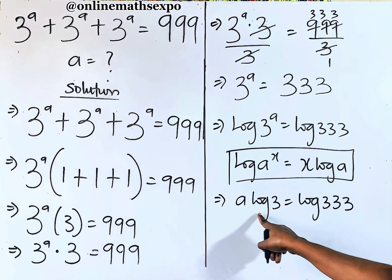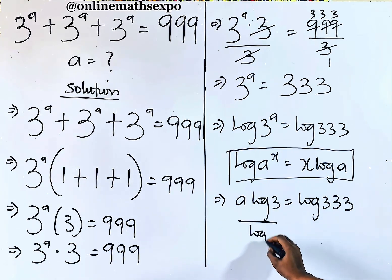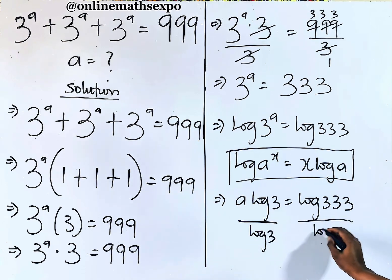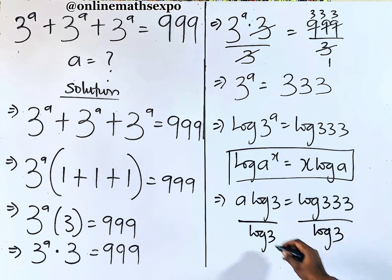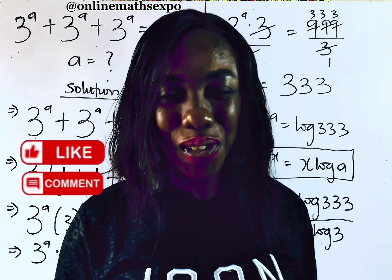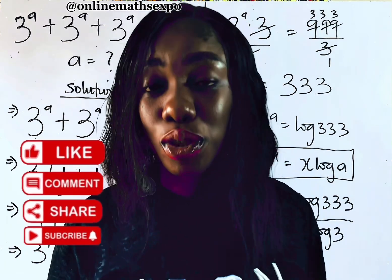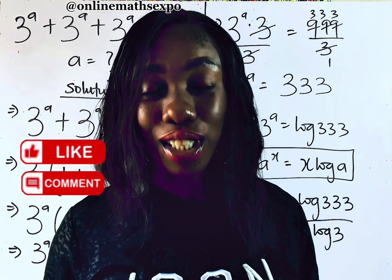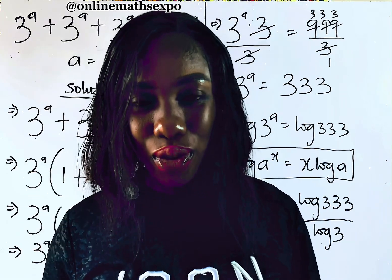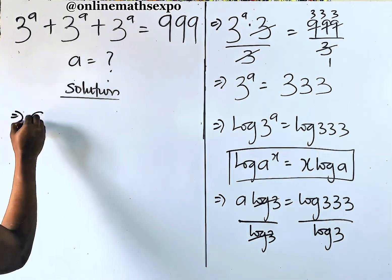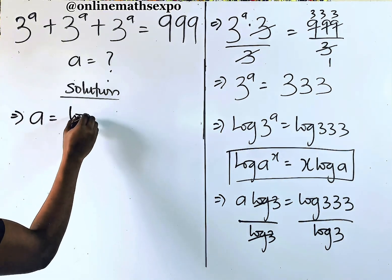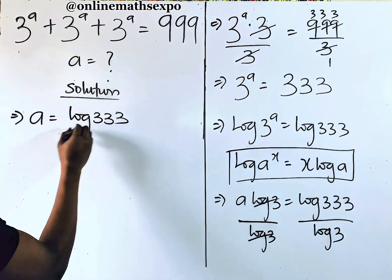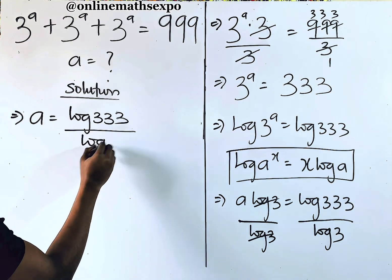So in that case, this power multiplies, giving us a log 3 is equal to log of 333. Now to get our a, divide both sides by log 3. This cancels, and a is equal to log of 333 divided by log of 3.